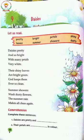First, I will tell you about this poem. Daisy flower — you can see it. Rose, Tulip, Sunflower, etc. This is a Daisy flower. I will tell you about this poem. Let us read.